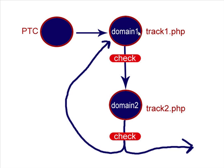If you have two regular domains, even if they are completely developed websites, it does not matter, because you're only going to be uploading two files: track1.php on your first domain and track2.php on your second domain. The paid-to-click people are going to click the link — the advertisement — and go to your first domain. The URL that the paid-to-click people click is going to be something like www.mydomain.com/track1.php.